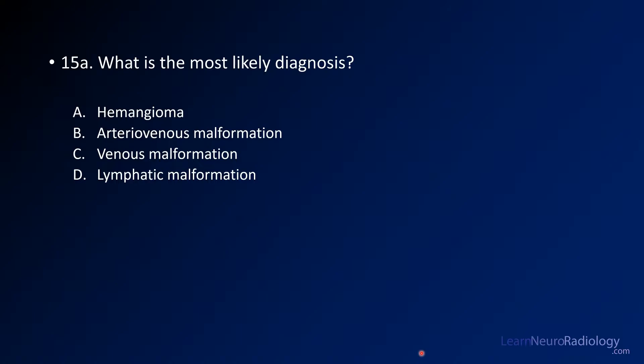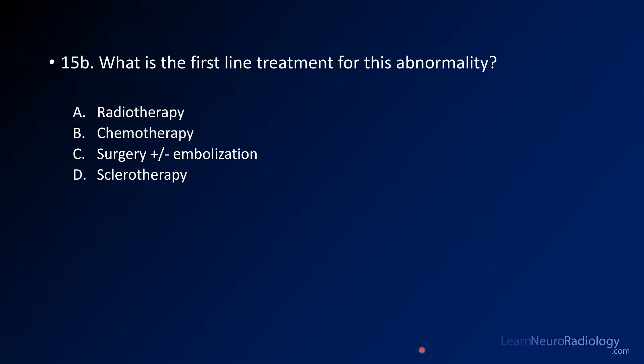Do you believe this is a hemangioma, an AV malformation, a venous malformation, or a lymphatic malformation? And then, what is the first-line treatment for this abnormality?